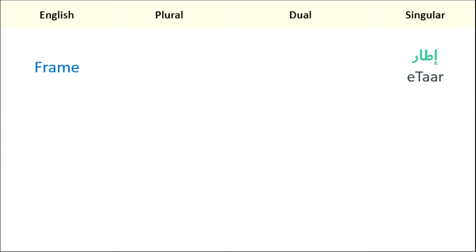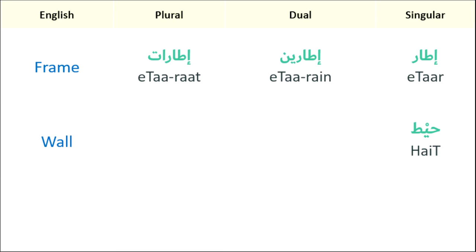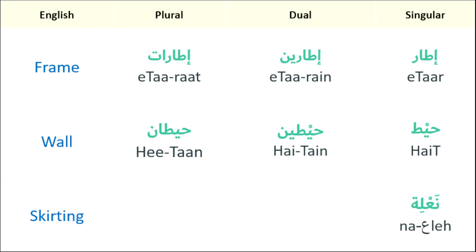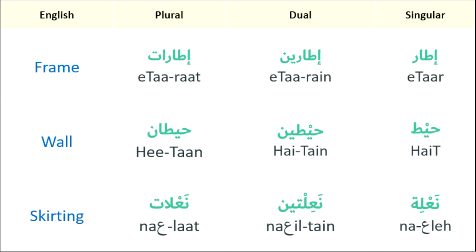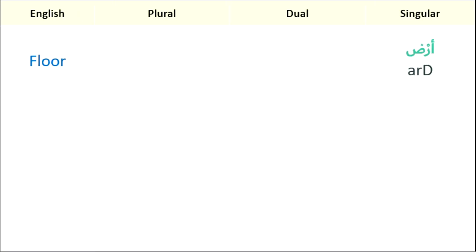Now let's have a recap. Frame: singular 'itar', dual 'itarine', plural 'itarat'. Wall: singular 'height', dual 'heightine', plural 'heitan'. Skirting: singular 'na'le', dual 'na'ltayn', plural 'na'lat'. Floor: singular 'ard'. Ceiling: singular 'saff'.